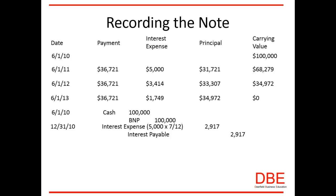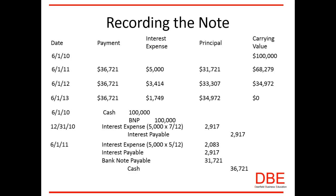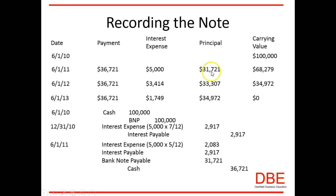On 6-1-11 we're actually making our payment. Always start with what you know — you're writing a check for thirty-six thousand seven hundred and twenty-one dollars, that's your credit. Then you're paying off the interest payable from the adjusting entry of two thousand nine hundred and seventeen dollars, the remaining interest expense of five-twelfths of five thousand equals two thousand and eighty-three dollars, and then the principal payment of thirty-one thousand seven hundred and twenty-one dollars lowers the note payable account.